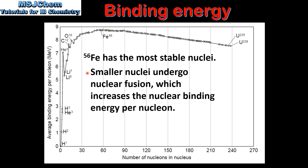Smaller nuclei, which are those to the left of iron-56, undergo nuclear fusion, which also increases the nuclear binding energy per nucleon. An example of this is the nuclear fusion of the isotopes of hydrogen — deuterium and tritium — which we looked at in a previous video.